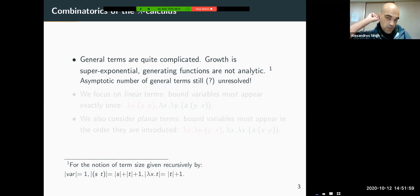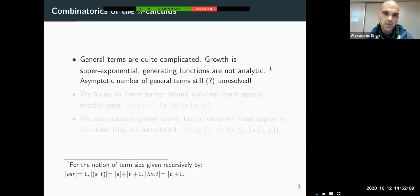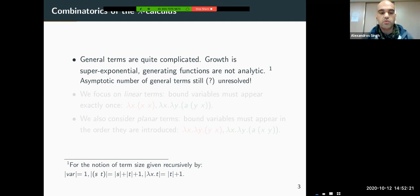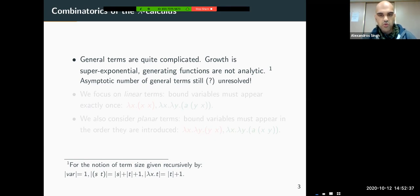The combinatorics of the Lambda calculus is what we are going to talk about. The terms of the general Lambda calculus are quite complicated — their growth is super-exponential and the general functions involved are not analytic, for some appropriate notion of size given recursively by assigning size one to variables and size one plus the sizes of constituent terms for applications and Lambda terms. The asymptotic number of these general terms is still unresolved.